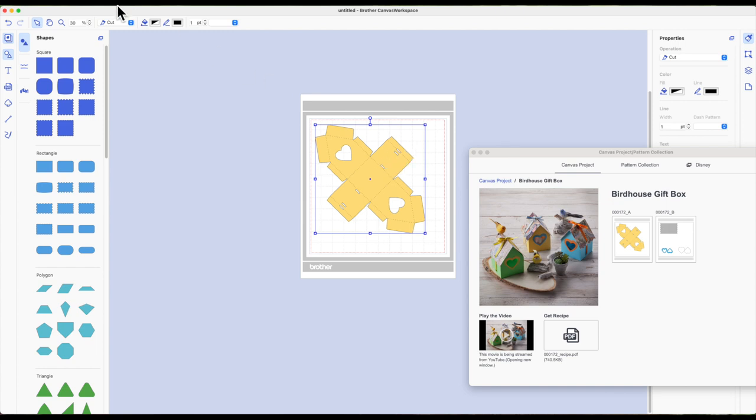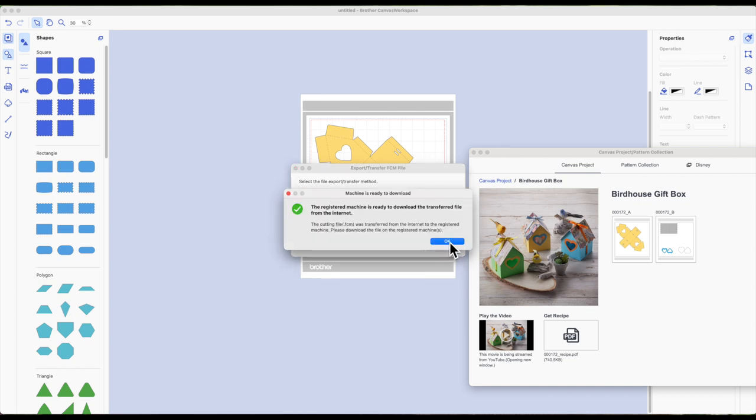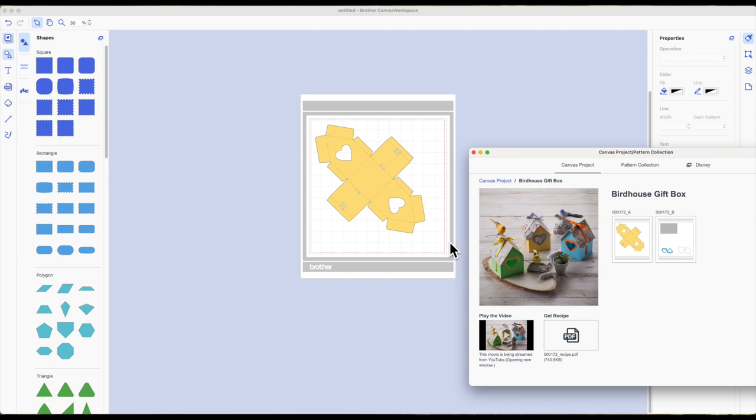Now I'm going to send this to my machine. Top toolbar, go ahead and click on file, export, and then click on transfer. Then click OK. I'm going to go to my machine and cut this piece out.